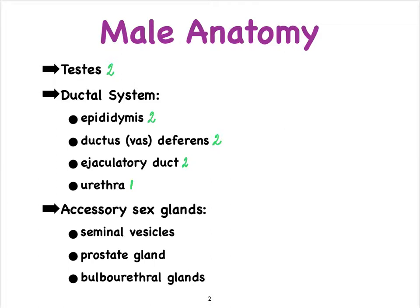In addition to the ductal system and the testes, we also have the sex glands that make the seminal fluid. That includes two seminal vesicles on the back of the bladder, a single prostate gland — notice there's no R here, it is prostate and not prostrate, which means something very different — and then we have two bulbourethral glands, which also go by a synonym that I'll point out when we get to that point.